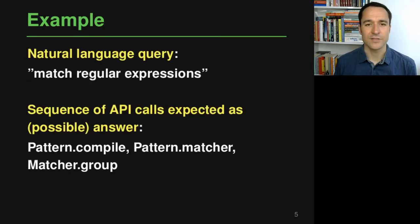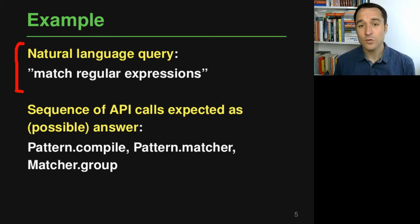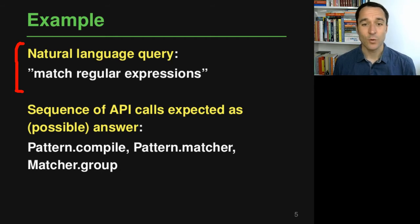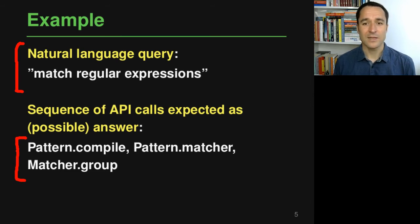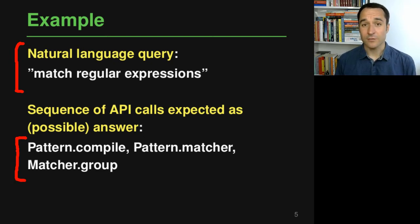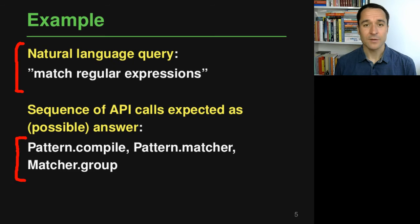For a concrete example, the natural language query could be something like 'I want to match regular expressions.' One possible answer would be a sequence of Java API calls: pattern.compile, then pattern.matcher to get a matcher, and then matcher.group to actually match a string against a regular expression. Knowing these three API calls gives a developer a much easier time than searching manually through all the APIs or searching the web for examples.